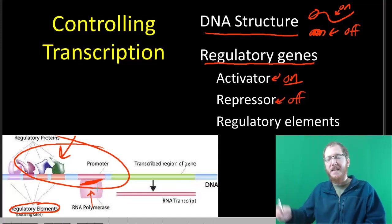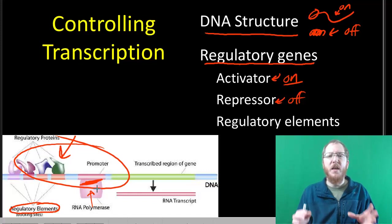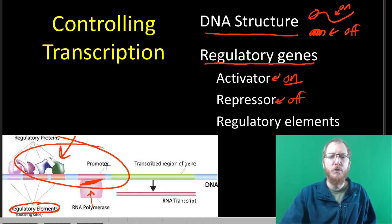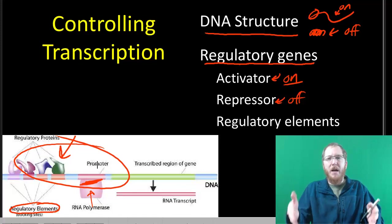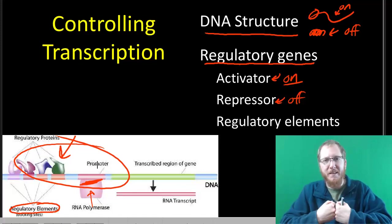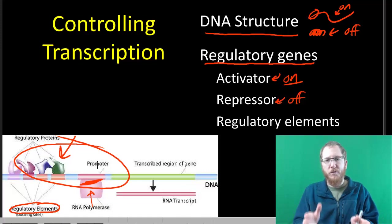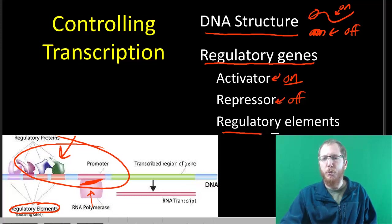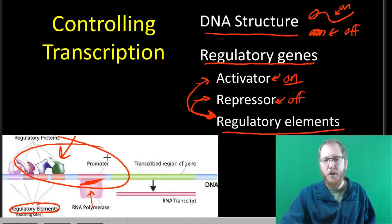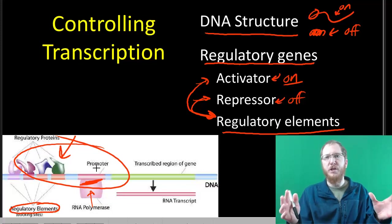Whereas repressors, they kind of bind and they normally will just kind of sit there. They'll bind and block this general promoter region, and so that way the RNA polymerase can't attach because that repressor protein is just kind of sitting there making it where they can't get to it. So repressor proteins will shut it off, activator proteins will turn it on, and these regulatory elements just refer to parts of the DNA where these guys bind to. Activators and repressors will bind to these regulatory elements, these sections around the promoter towards the start of a gene. That's where they're going to actually do their job.